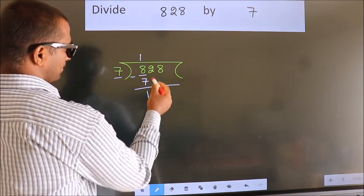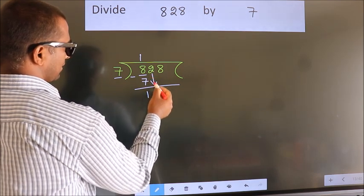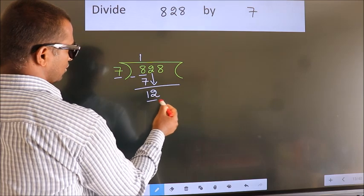After this, bring down the beside number. So, 2 down. So, 12.